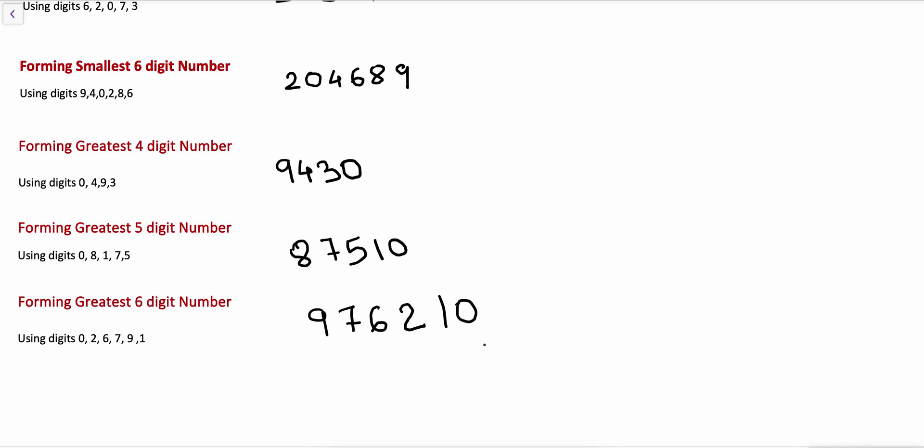To form the smallest digit numbers, write all the numbers in ascending order except 0 — the 0 should come at the second place. To form the greatest digit number, write all the digits in descending order. Thank you.